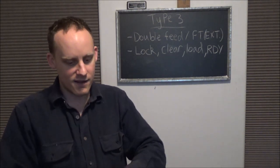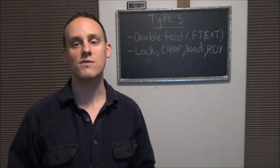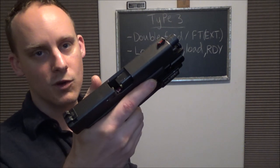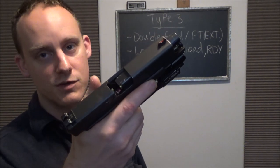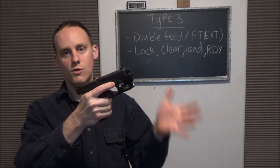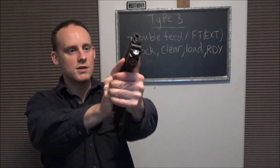Now let me go ahead and find this piece of brass and set this up again and show you in real time what it looks like. I have my Type 3 Failure to Extract set up here. Very common look right here where it didn't go all the way in. So mush, bang bang bang, mush. Identification, lock, clear, load, ready.